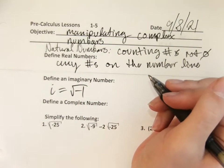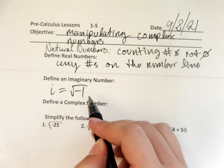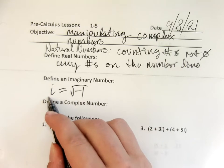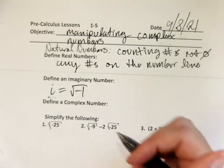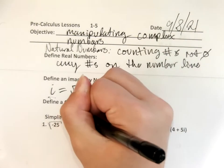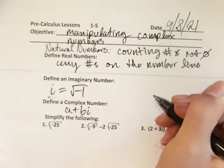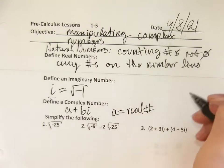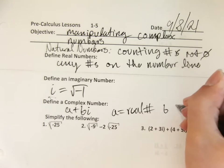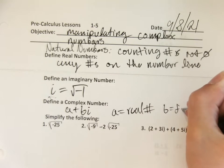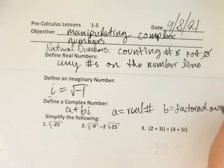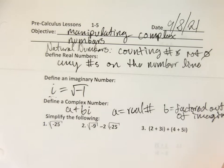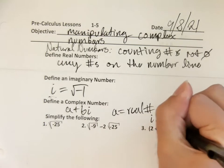Anytime you take the square root of negative one, or anything that can be factored with negative one, you have an i. The complex number is a plus bi. A is a real number. B is the real number that was factored out of the imaginary number — it's called a coefficient. And i is the square root of negative one.